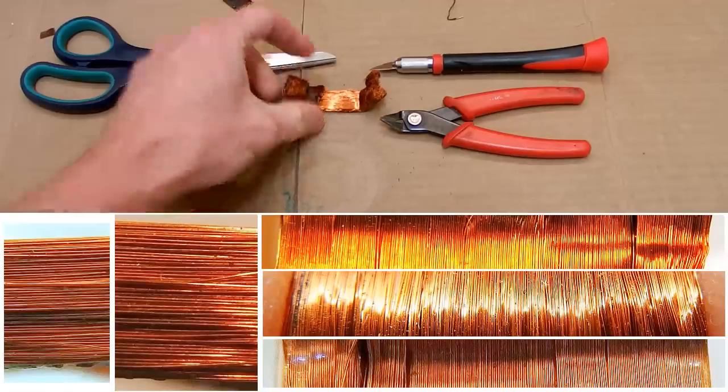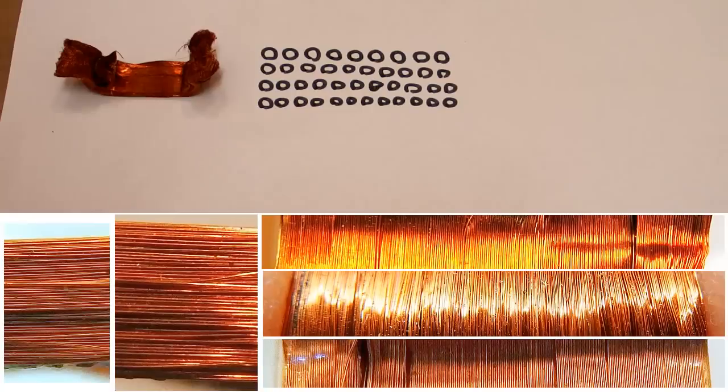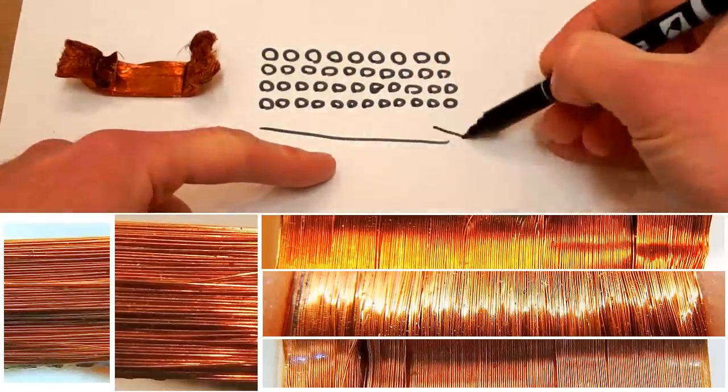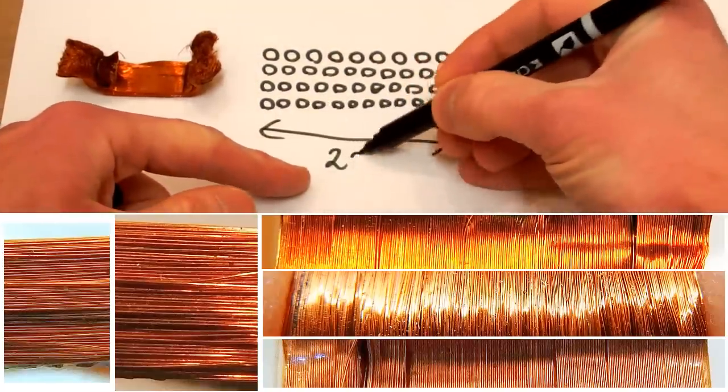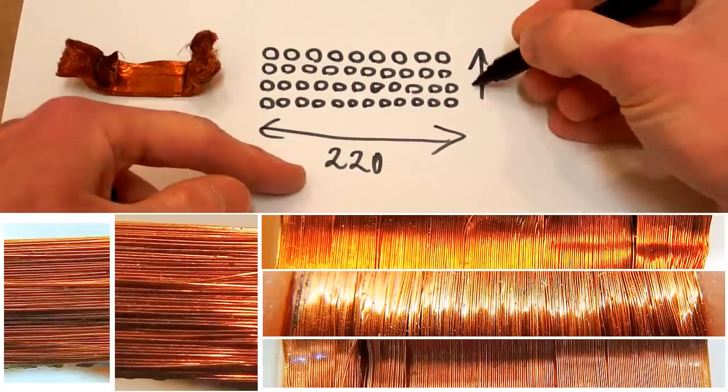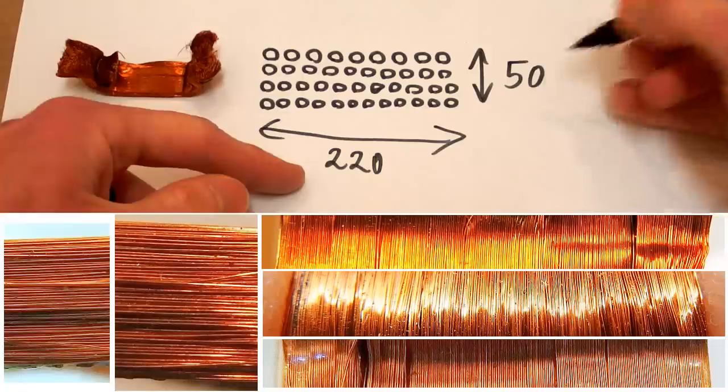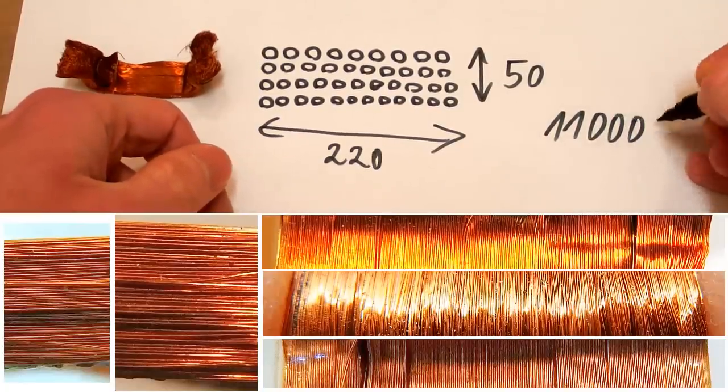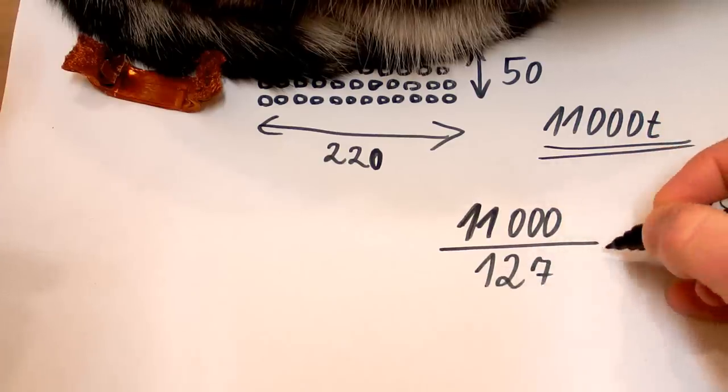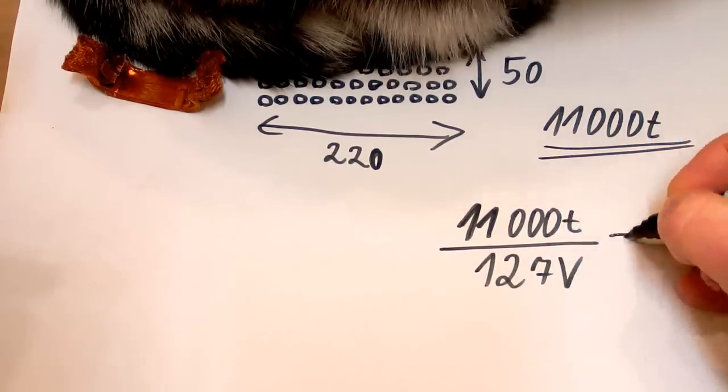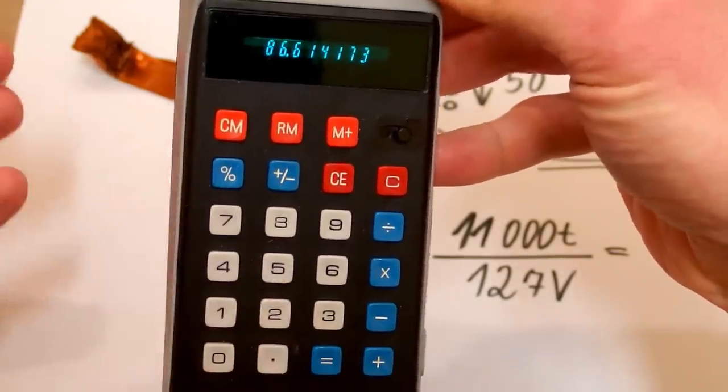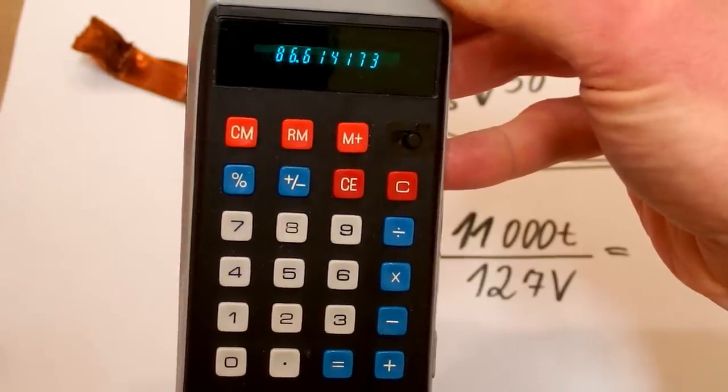It was just impossible to count the turns. So I just cut it. I took detailed pictures of it and it seems to be over 10,000 turns. It's impossible to count it. And from the pictures it seems like there is about 220 turns in each layer and there is about 50 layers. And this is about 11,000 turns per 127 volts, and this is about 87 turns per volt.